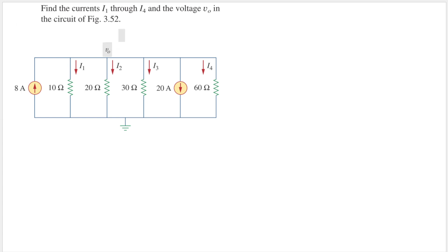v0 is the voltage here, so let's name this node as node v0. All of this from here until there is v0. This symbol here is our reference node — some people call it the ground node.